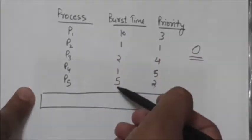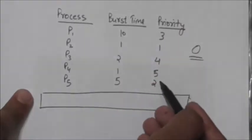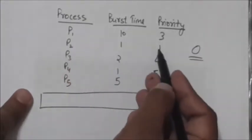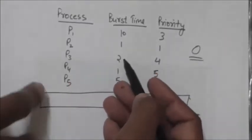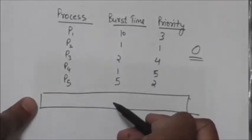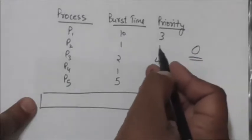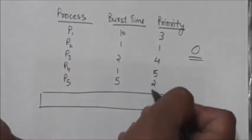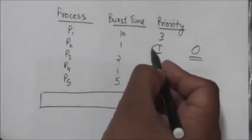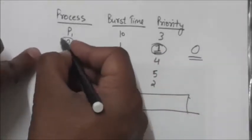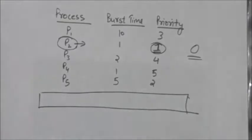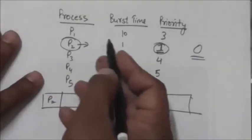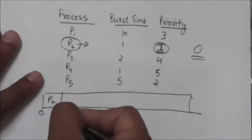Each process has a CPU burst time and a priority value. Among these processes, the lowest priority number is 1, which indicates the priority of process P2. So P2 has the highest priority and the CPU will be allocated to P2 first. The burst time of P2 is 1, so after one unit of time, P2 will release the CPU.